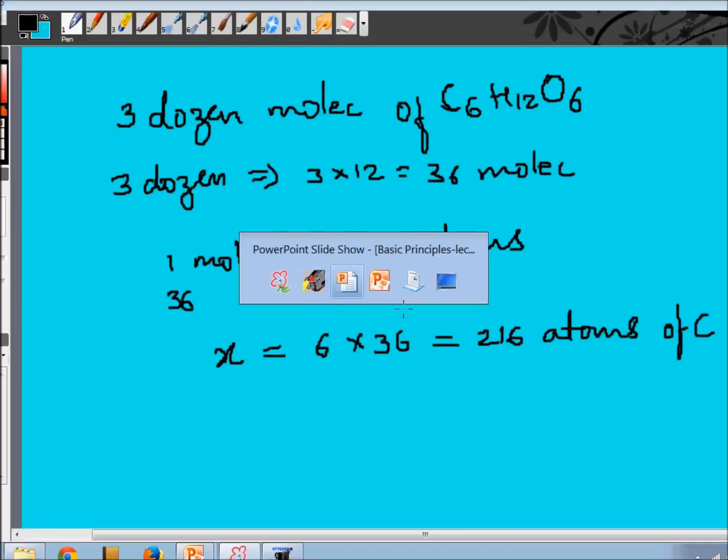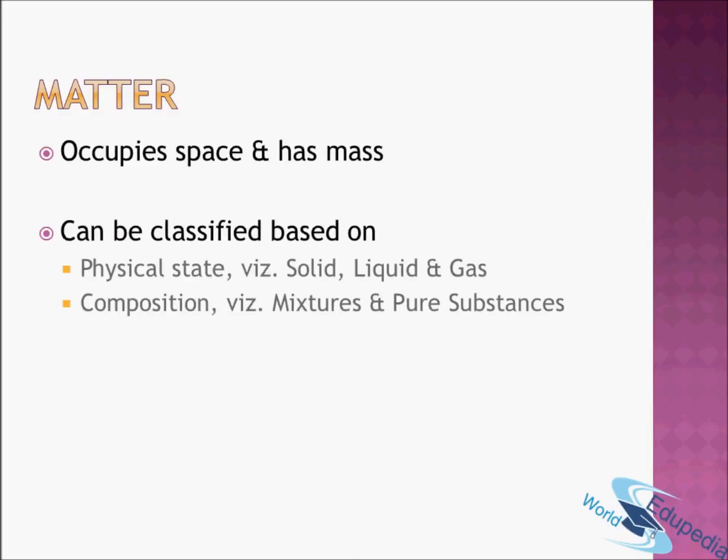So let's move on to the last basic principle which we have to take into account. It is the matter. What is matter? Well, you already know, anything which occupies space and has mass. So everything that you see around you is nothing but matter. Matter can be classified further based on, say, its physical state or based on composition. Based on physical state we classify matter into solid, liquid, and gas.